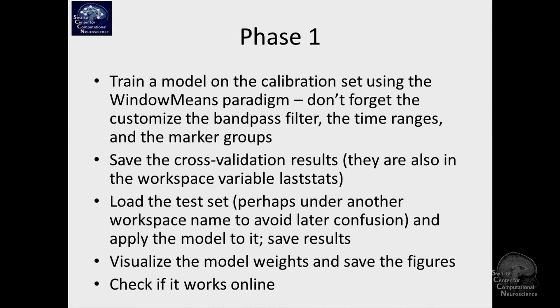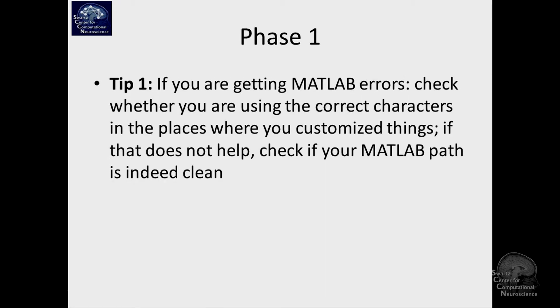Phase one means: compute windowed means, do cross validation, visualize it, apply it to the test set, and see if you can run it online — which should be possible.